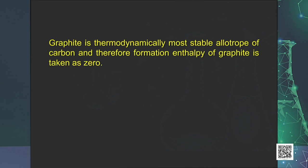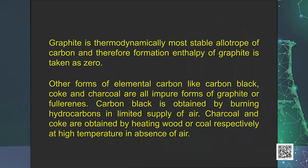It is important to know that graphite is the thermodynamically most stable allotrope of carbon, and therefore the formation enthalpy of graphite is taken as zero. The formation enthalpy values of diamond and fullerene C60 are 1.90 and 38.1 kJ/mol respectively. Other forms of elemental carbon like carbon black, coke and charcoal are all impure forms of graphite or fullerene. Carbon black is obtained by burning hydrocarbons in a limited supply of air. Charcoal and coke are obtained by heating wood or coal respectively at high temperature in the absence of air.